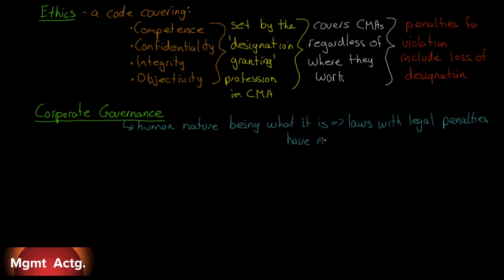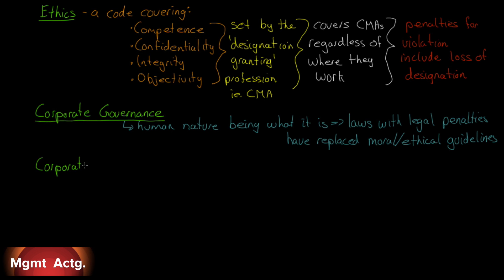Our elected officials are seeing that moral and ethical guidelines aren't really working — we can't count on humans to be moral and ethical, so laws are put in place to punish them. Now, when the top officers of a company sign the annual and quarterly statements, they must sign them with liability — if they knowingly sign something that was wrong, they can go to jail. Before, that used to just be unethical. Now it's illegal.